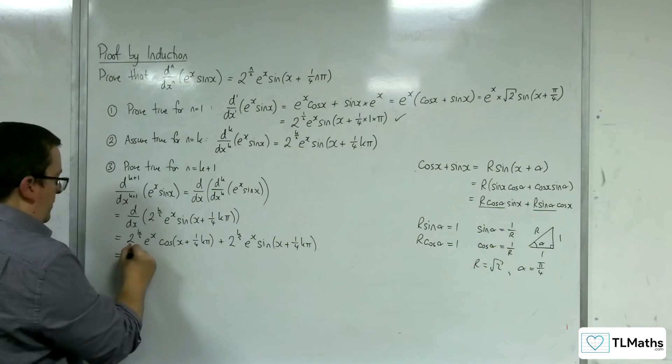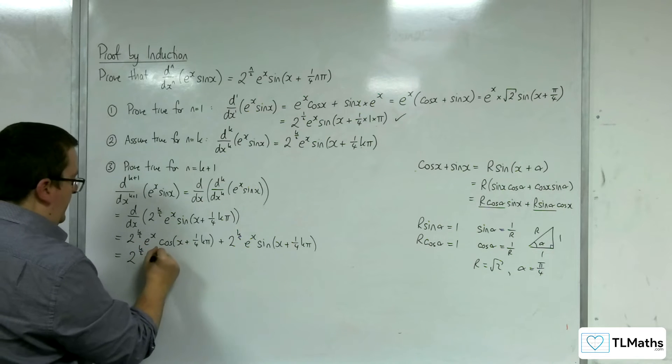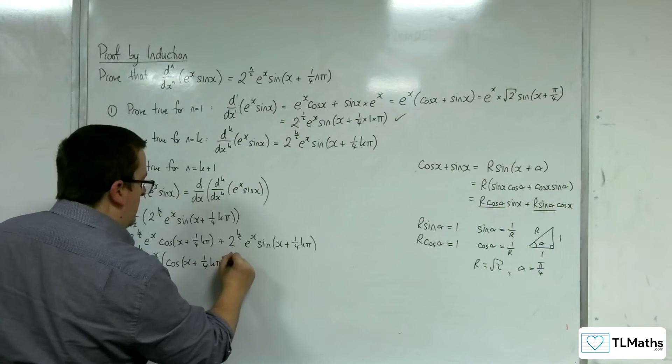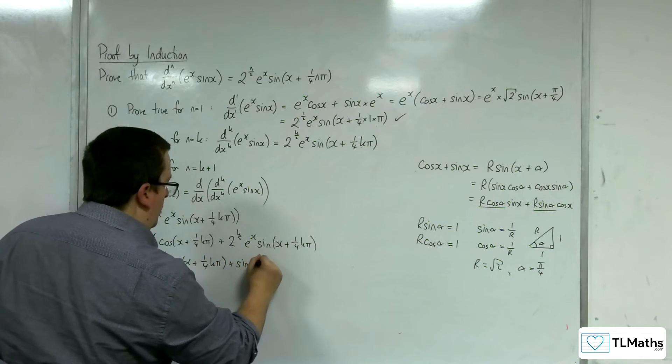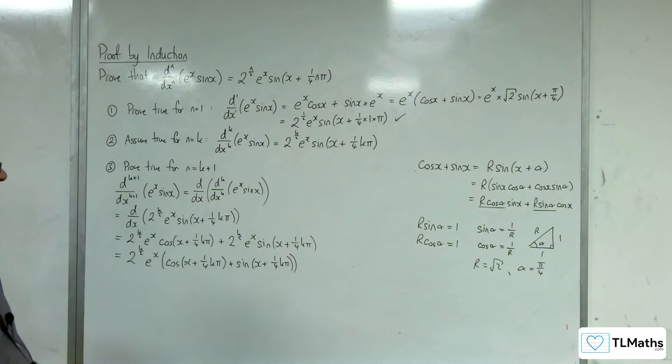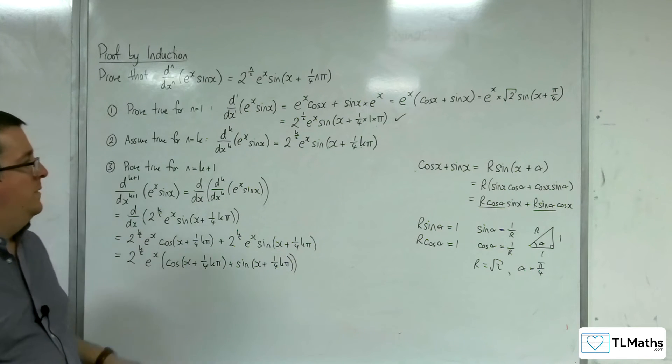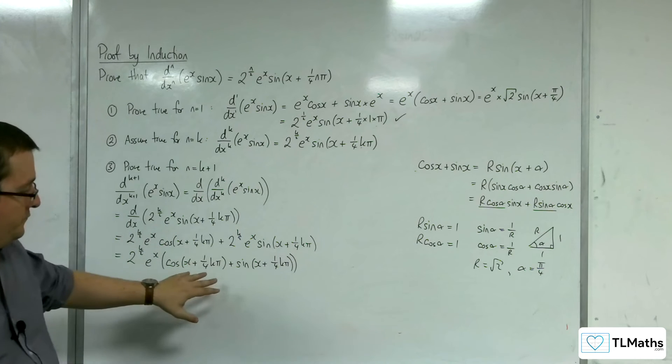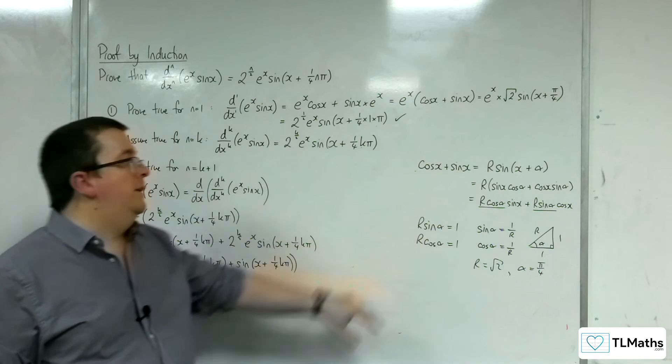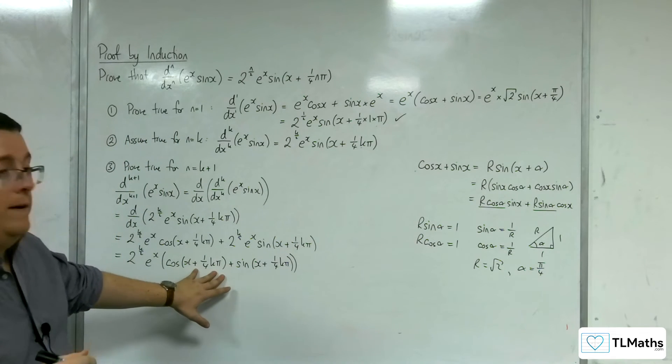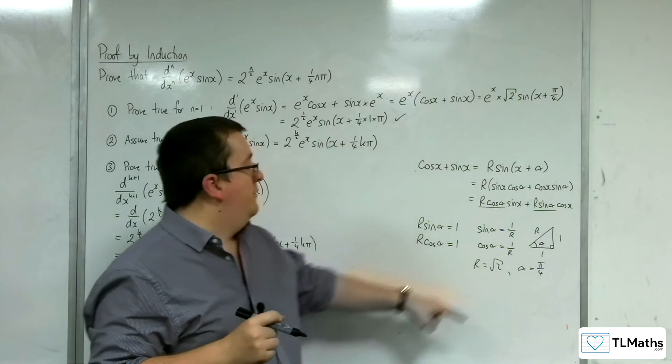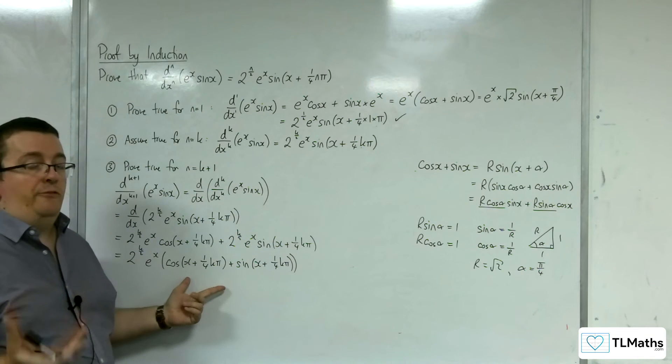Let's tidy that up. So we're going to factor out the 2 to the k over 2 and the e to the x. And having the bracket cosine of x plus 1 quarter k pi plus sine of x plus 1 quarter k pi. So the next job is to say, I want to write that in a similar form, the r sine x plus alpha. Of course, the x here is x plus a quarter k pi. The alpha is still going to be the pi over 4 because this is still in the same format.